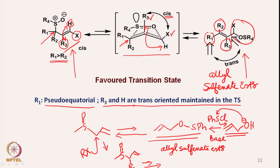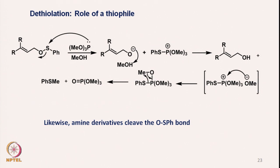Further reactions can then be carried out to give R and OH substituents. Essentially, this allyl alcohol can be converted to a substituted allyl alcohol via this sulfoxide-sulfenate rearrangement. Dethiolation occurs using trimethyl phosphate as a very useful thiophile. When the allyl sulfenate ester is formed, trimethyl phosphate attacks with its lone pair of electrons onto the sulfur atom, breaking the sulfur-oxygen bond.